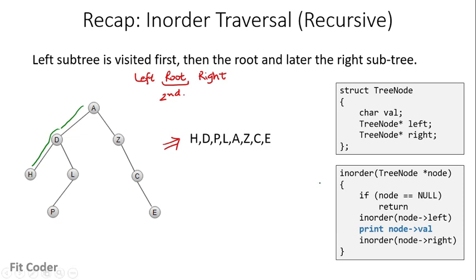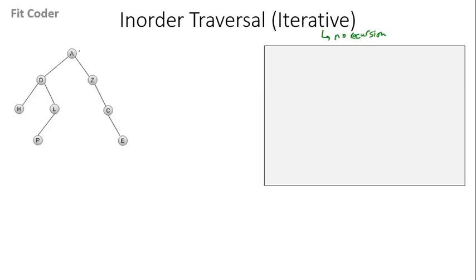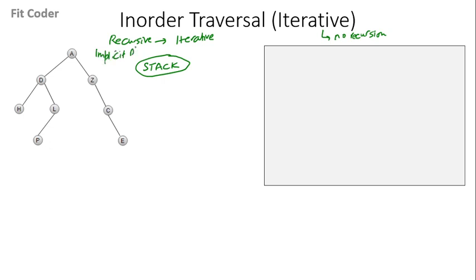In this video we'll see how we can do the iterative implementation for inorder traversal. Whenever we are converting a recursive-based method to an iterative method, we make use of a stack, because recursion uses an implicit stack which is provided by the system. So when we convert a recursive approach to an iterative approach, we use a stack.